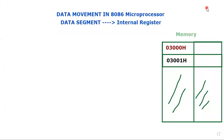Welcome everyone. In this video tutorial we are going to talk about data movement in the 8086 microprocessor, and specifically we will discuss data stored in memory — or the data segment. In the 8086, memory is divided into various segments, so since we are dealing with data we are dealing with the data segment.